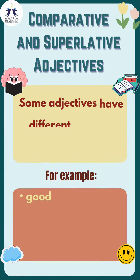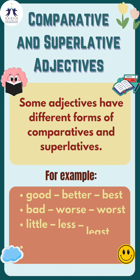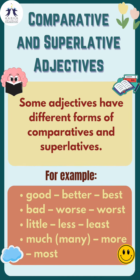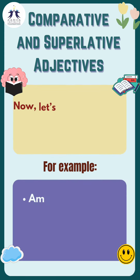Some adjectives have different forms of comparatives and superlatives. For example: good, better, best; bad, worse, worst; little, less, least; much, more, most.